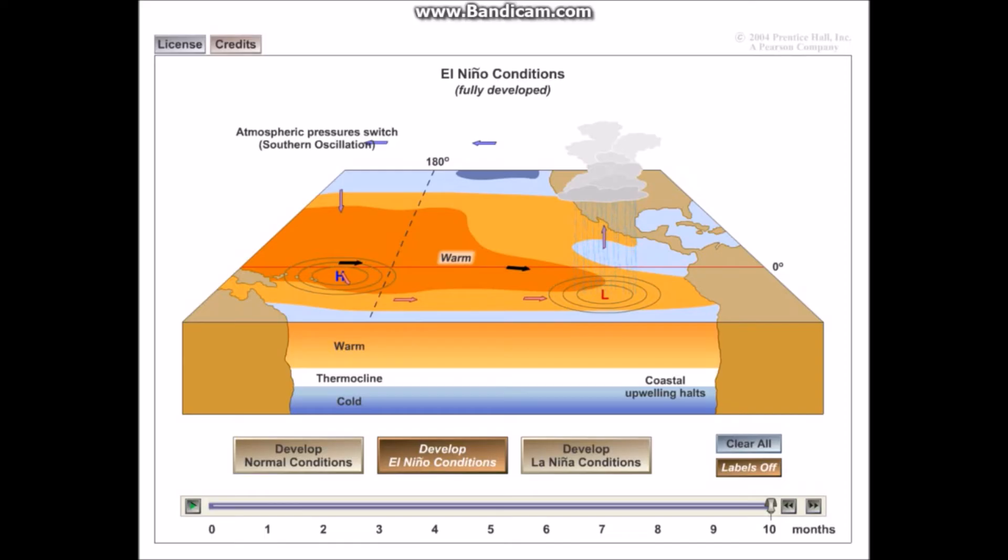This therefore is going to cause a lot of flooding in Peru and Chile and South America and potentially California, and is also going to cause droughts and therefore possibly forest fires in the rainforest regions of Indonesia, Darwin, North Australia and places like that.